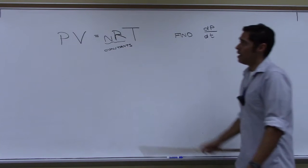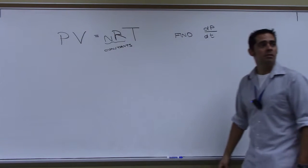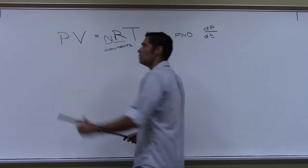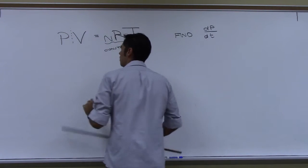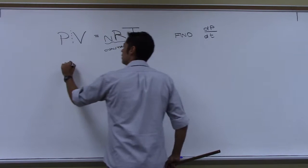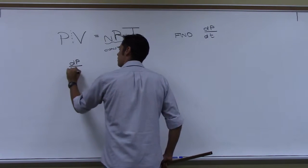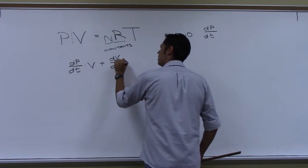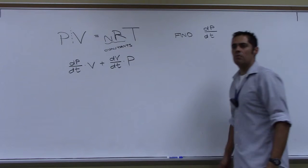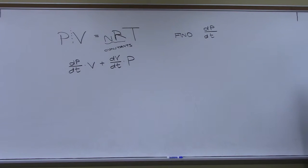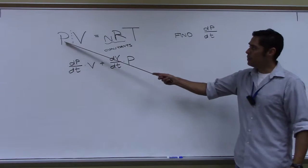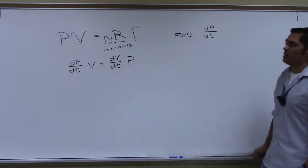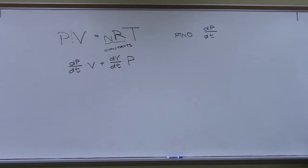To do that I need to take the derivative of the left side, which I'm going to need the product rule, because these are both variables. Derivative of P with respect to time times V, plus derivative of V with respect to time times P. That's product rule — derivative of P with respect to time times V, plus derivative of V with respect to time times P.